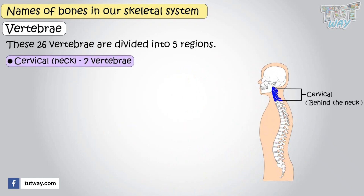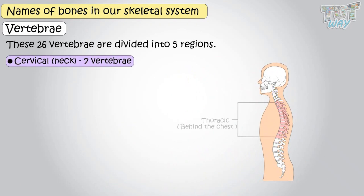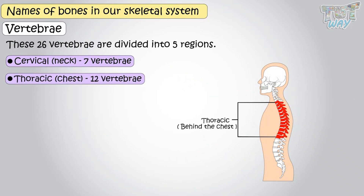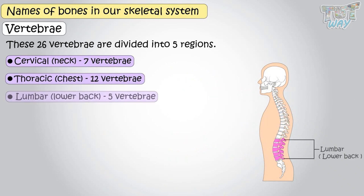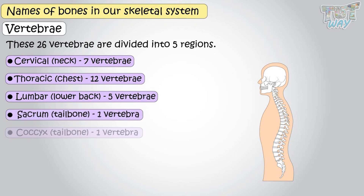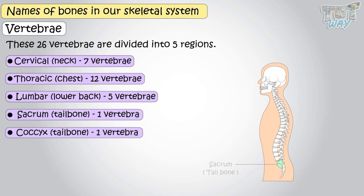The cervical region has seven vertebrae, the thoracic region has 12 vertebrae, the lumbar region has five vertebrae, and there is one vertebra each in the sacrum and coccyx, or the tailbone.